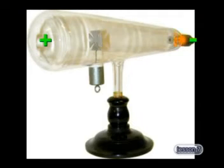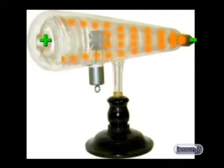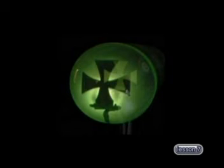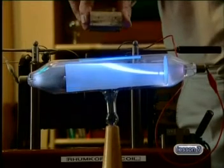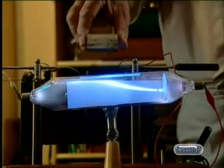So when a Crookes tube is turned on, the cathode rays are actually a stream of electrons. These moving negatively charged particles will normally be accelerated from the negatively charged cathode towards the positively charged anode. When the stream of electrons touches the phosphors painted onto the inside of the glass tube, the phosphors glow.